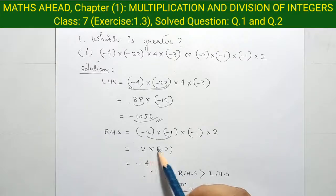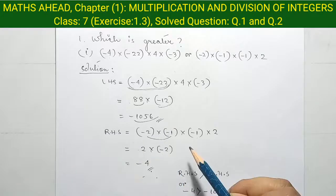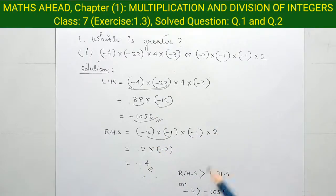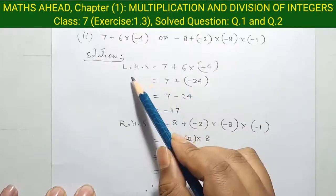Plus and minus became minus. When we compare both sides, we find minus 4 is greater and minus 1056 is smaller.